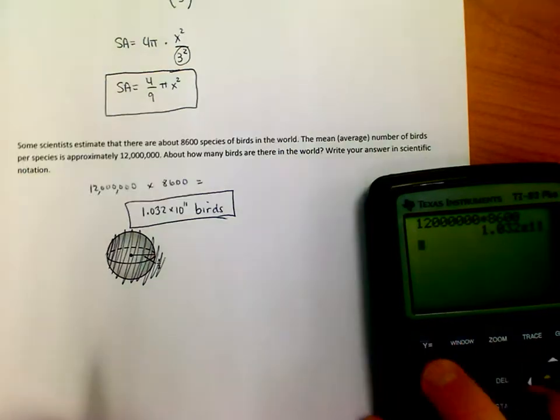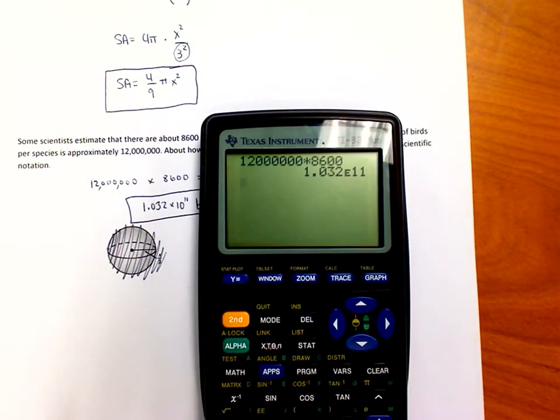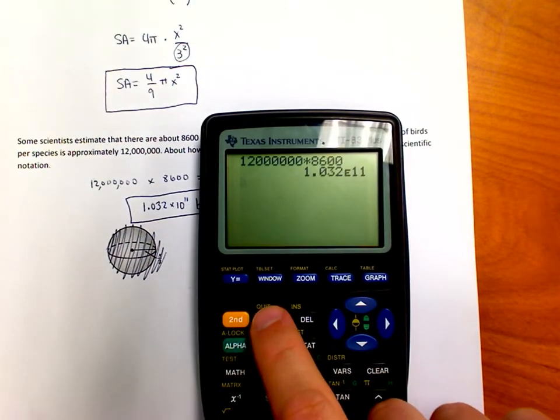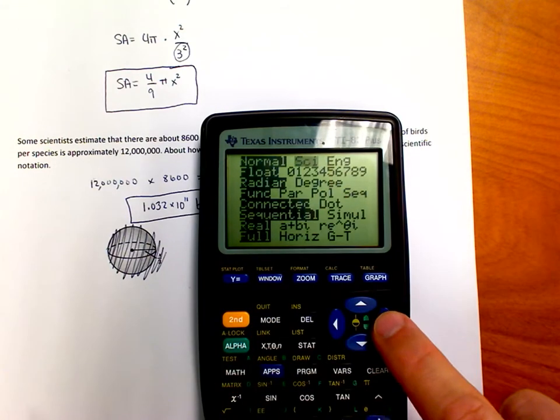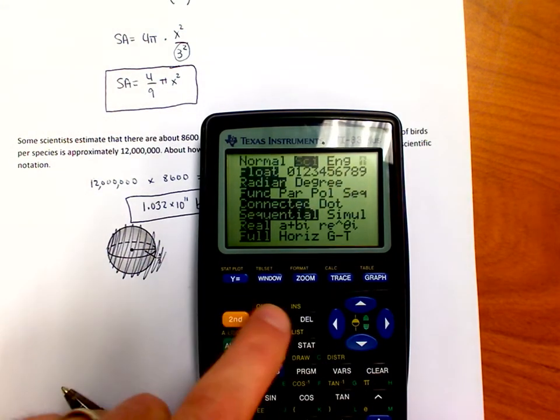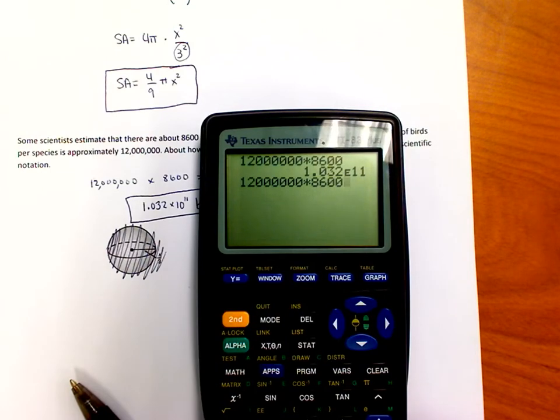Now, if my calculator, for whatever reason, does not display the answer in scientific notation, remember, you can always go to mode. And you can come over here and say, display my answer in scientific notation. And it would have done the same thing. You could have done this, and it would have given you the same answer.